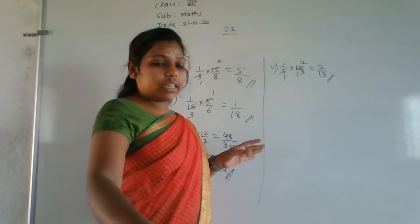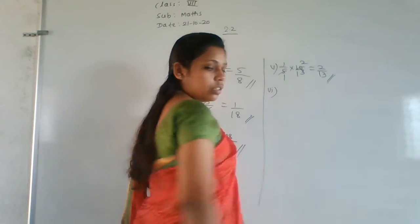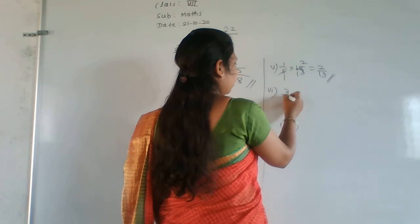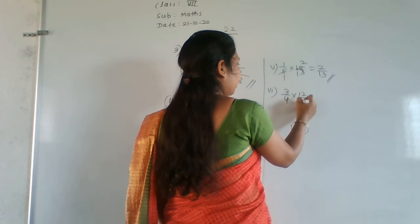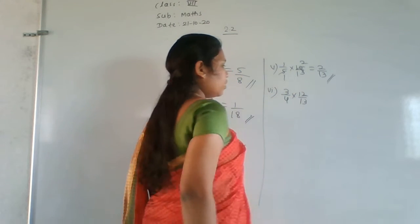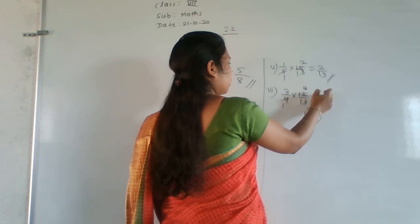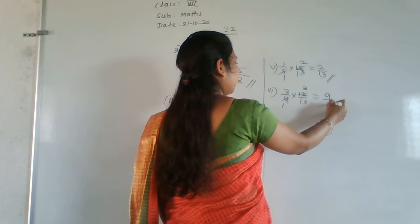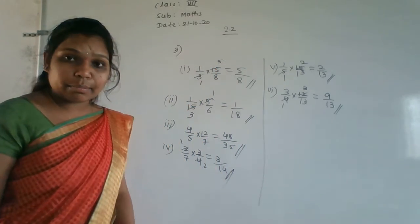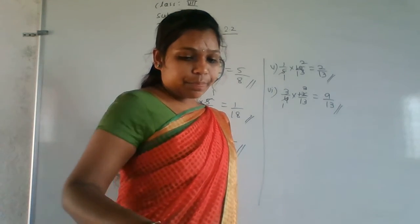Sixth question: 3/4 × 12/13. Cancel 4 and 12: 4 ones are 4, 4 threes are 12. Remaining numerator: 3×3=9. Denominator: 1×13=13. Answer is 9/13.